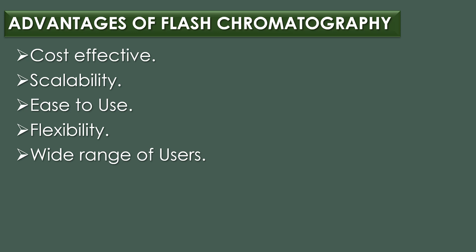The third advantage is ease of use. Flash chromatography systems have automatic parts that make the purification process easier, and software interfaces allow easy control and monitoring. The fourth advantage is flexibility — you can choose the stationary phase, mobile phase, and elution conditions, using different column types based on what needs to be separated. Finally, flash chromatography has a wide range of uses across many fields such as isolating natural products, drug discovery, and making chemical compounds.